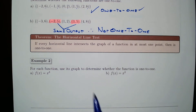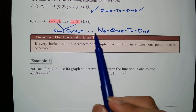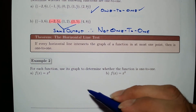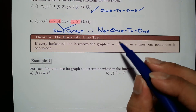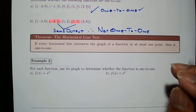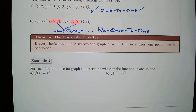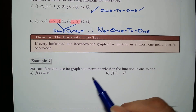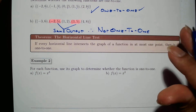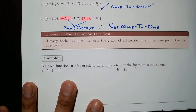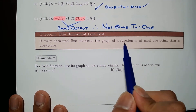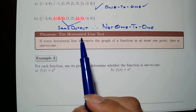We are going to use a new test: the horizontal line test. Recall from earlier in the semester we used the vertical line test to determine whether a given graph describes a function — if the vertical line crossed the graph at most once, it was a function; if it crossed more than once, it was not. The horizontal line test is a similar criterion used to determine whether the graph describes a one-to-one function.